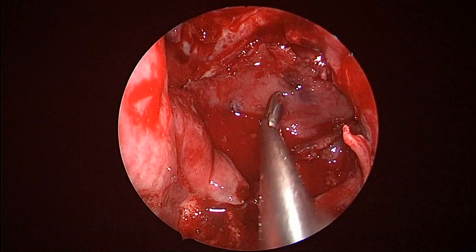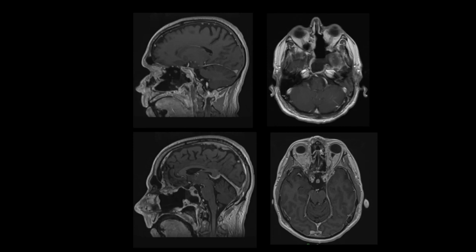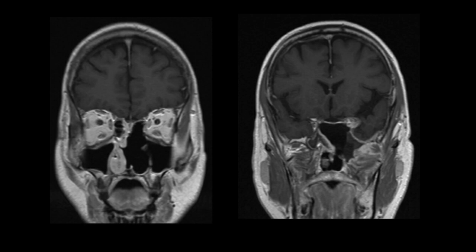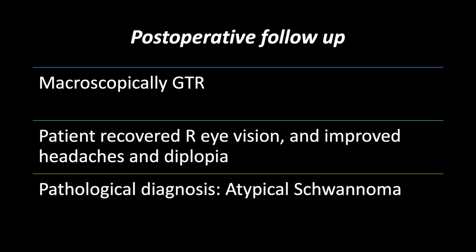We then covered both carotid arteries with the nasal septal flap that was harvested at the beginning of the case. Postoperative MRI showed complete resection of the tumor with no signs of complication and reestablishment of the temporal lobe position on the left side. The patient's vision improved completely on the right side with improvement of his numbness on the left side of the face, though he persisted with hemianopsia on the left side. Pathology showed a typical schwannoma with a Ki-67 of 30 percent.